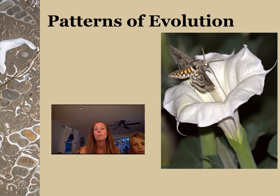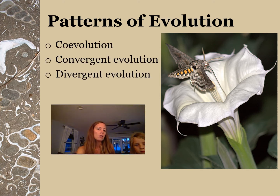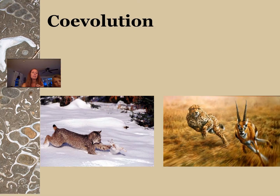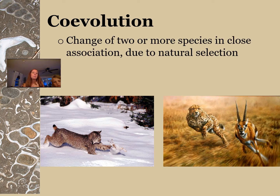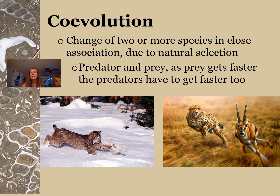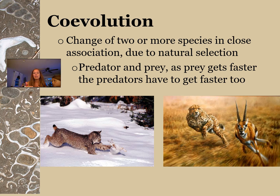Now we look at different patterns or ways evolution can happen. There are three: co-evolution, convergent evolution, and divergent evolution. Co-evolution is when two species change due to natural selection and they affect each other as they change. An example is predator-prey relationships: as prey gets faster, predators have to get faster too. Or as prey camouflages better, predators with better sight get to eat more, so they're more fit and have more babies.